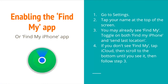How to enable the Find My App on your iPhone. First, go to Settings. Tap your name at the top of the screen. You may already see Find My — toggle on both Find My iPhone and Send Last Location. If you don't see Find My, tap iCloud, then scroll to the bottom until you see it, and then follow step 3.